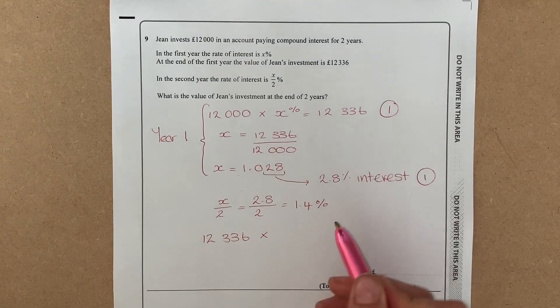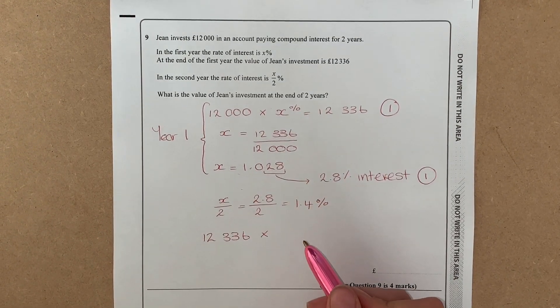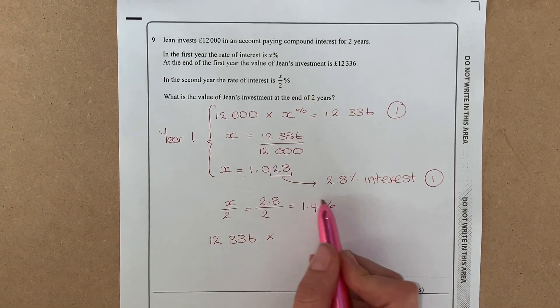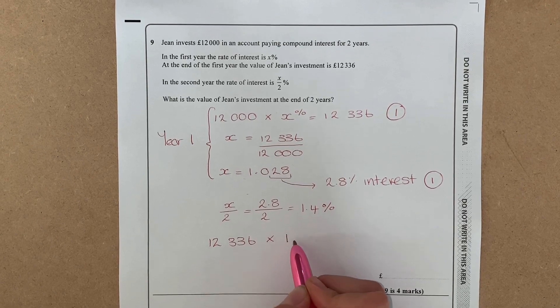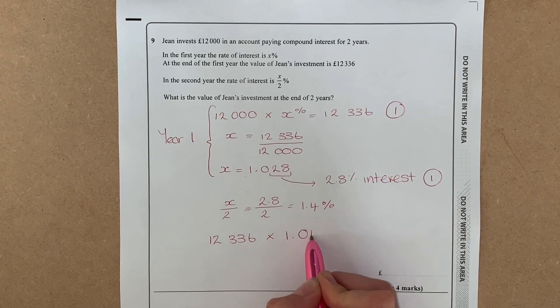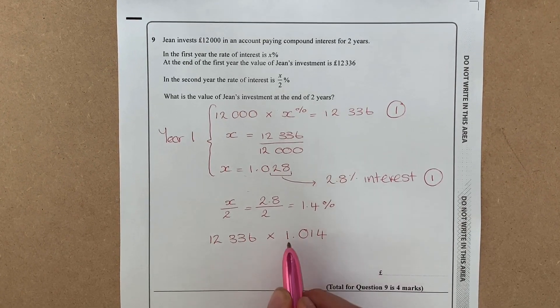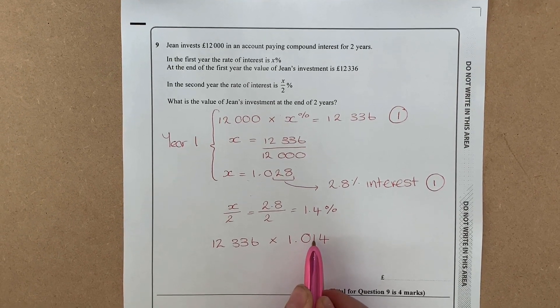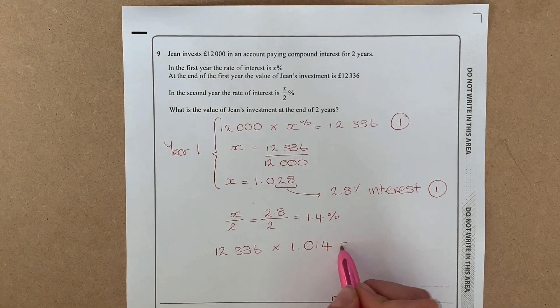That's going to take 100 percent plus our 1.4 percent, so our multiplier for this becomes 1.014. If you'd have just put 1.14, you're adding 14 percent, not 1.4 percent. So if we put that into the calculator we got 12,508.704.